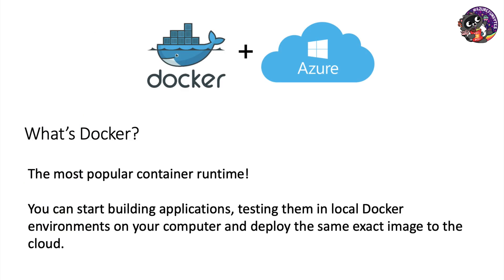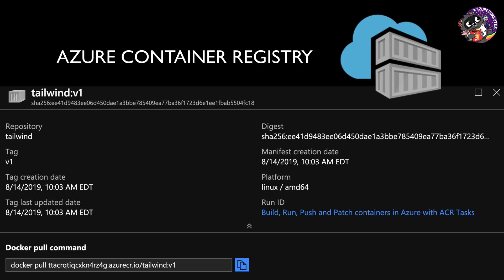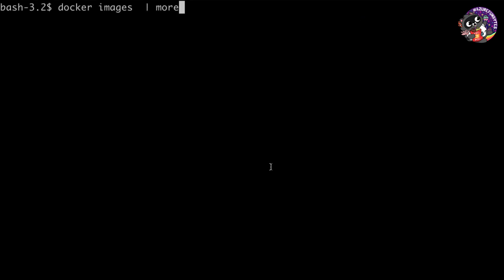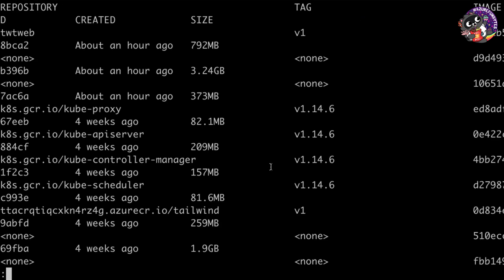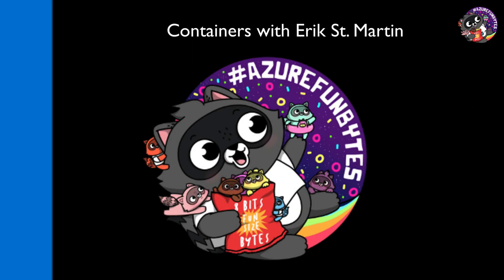Docker is a tool for building images for your containers, allowing you to package and share them in registries. Registries act like repositories, just like we keep our code in — giving us a place to track our changes and then eventually deploy from.